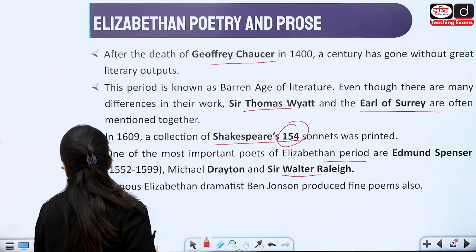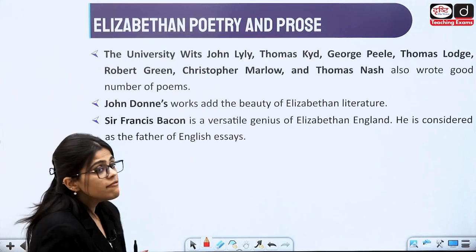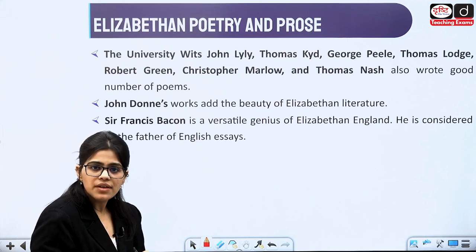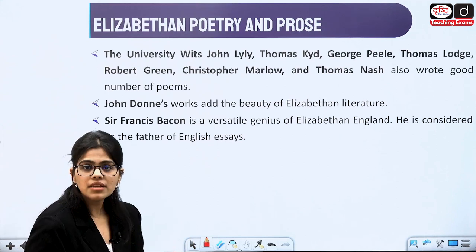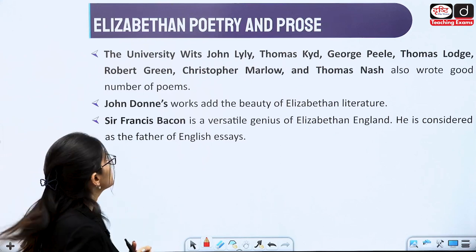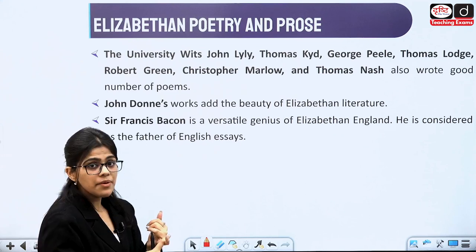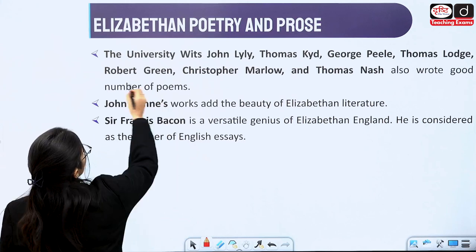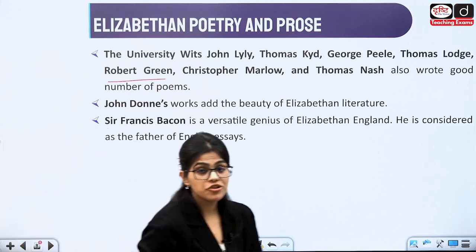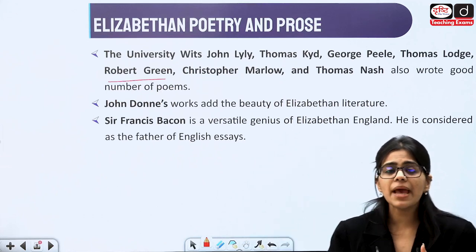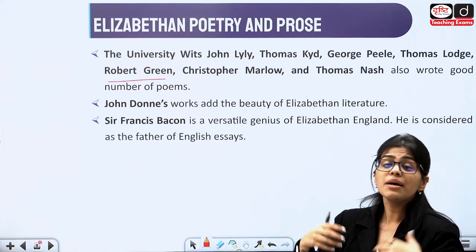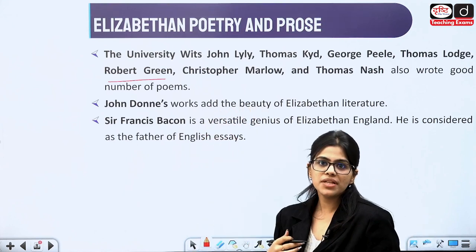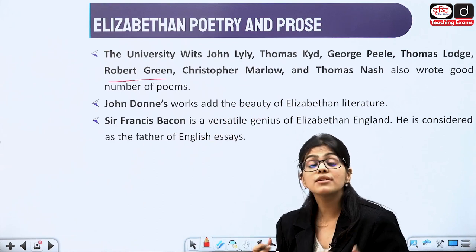Then we have Ben Jonson — who can forget this very important figure. We will talk in detail about the University Wits — there are seven of them: Lily, Thomas Kyd, Peele, Thomas Lodge, Robert Greene, Christopher Marlowe, and Thomas Nashe. There were always tussles going on between them, people were attacking each other, and Shakespeare was influenced by some of the works they wrote. We will study all of that.